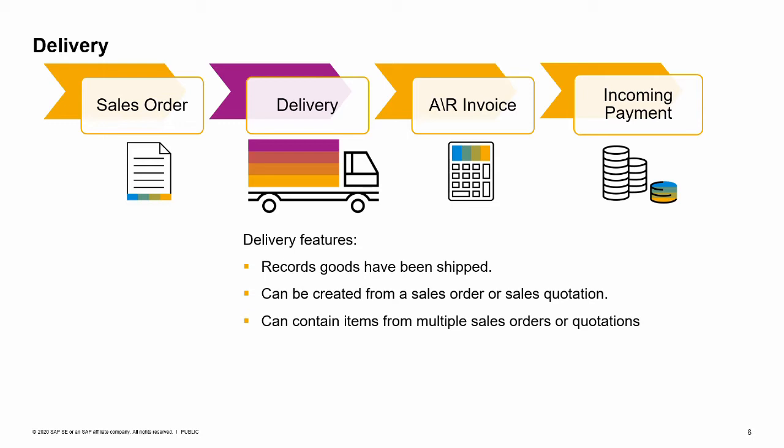A delivery records that goods have been shipped. This document is also sometimes referred to as a packing slip or delivery note. You can create a delivery from a sales order or sales quotation. To do so, simply display the sales order or quotation and select delivery from the Copy To button's drop-down list. If you have multiple sales orders to be delivered to one customer, you can open a blank delivery, add the customer name, then use Copy From to select from a list of sales orders and quotations for that customer.